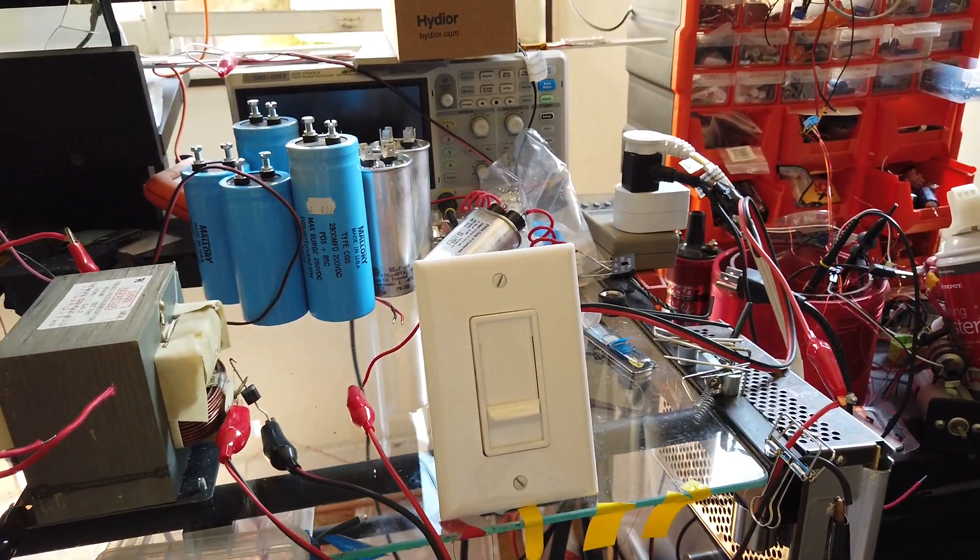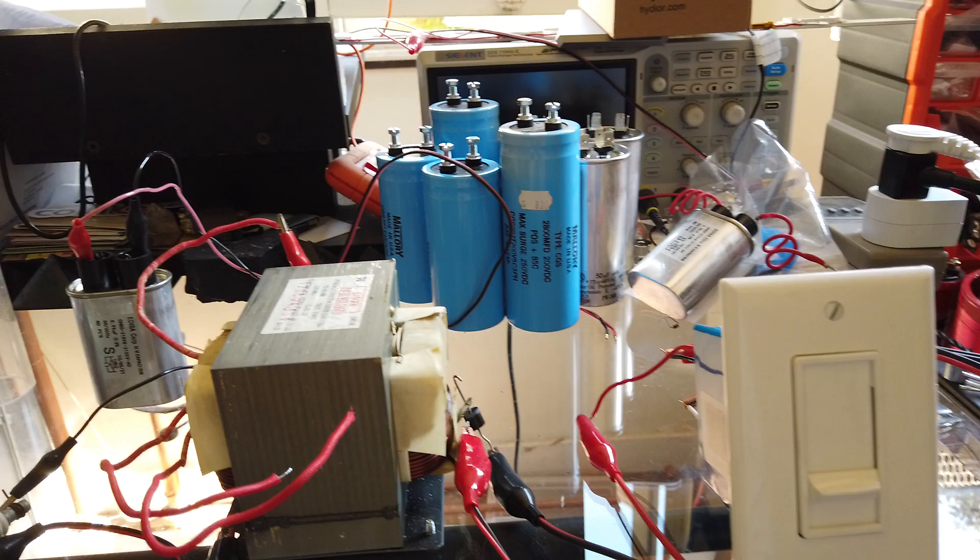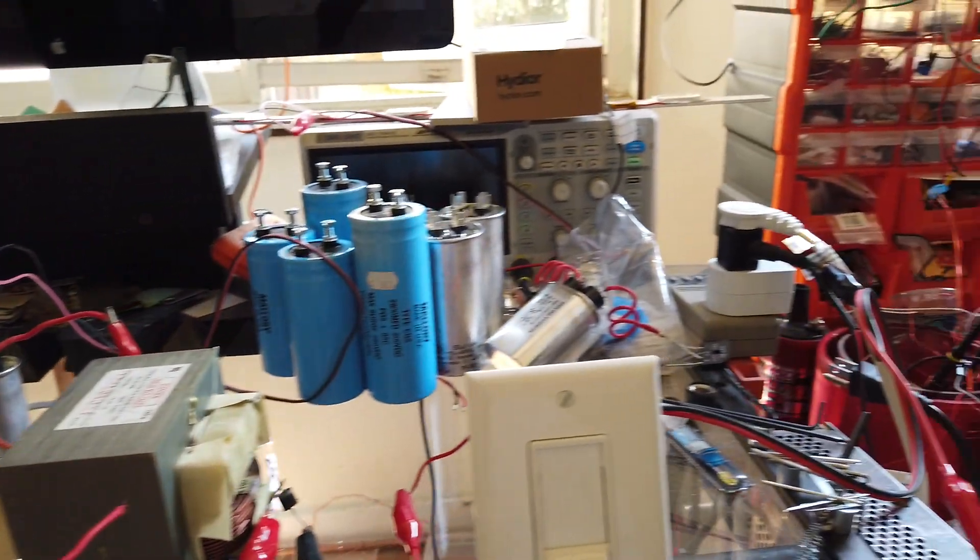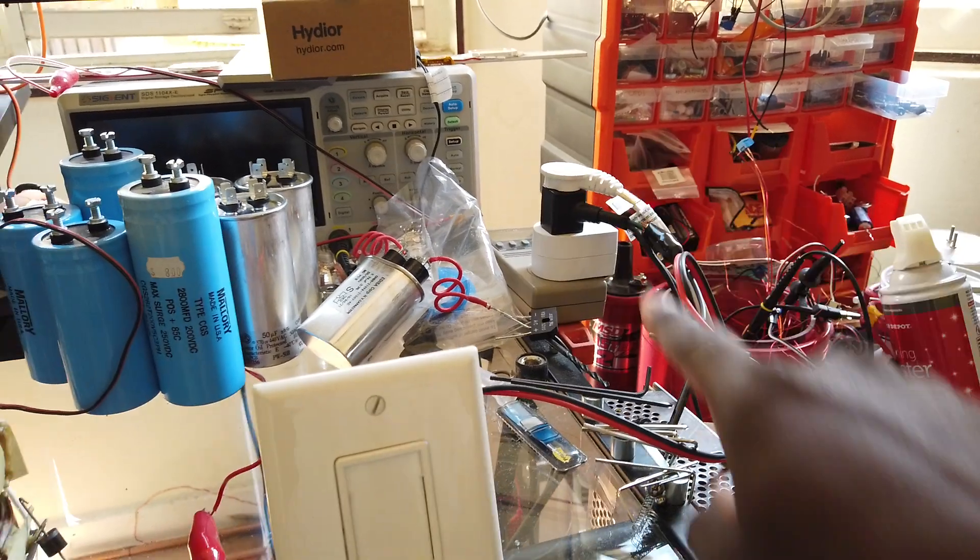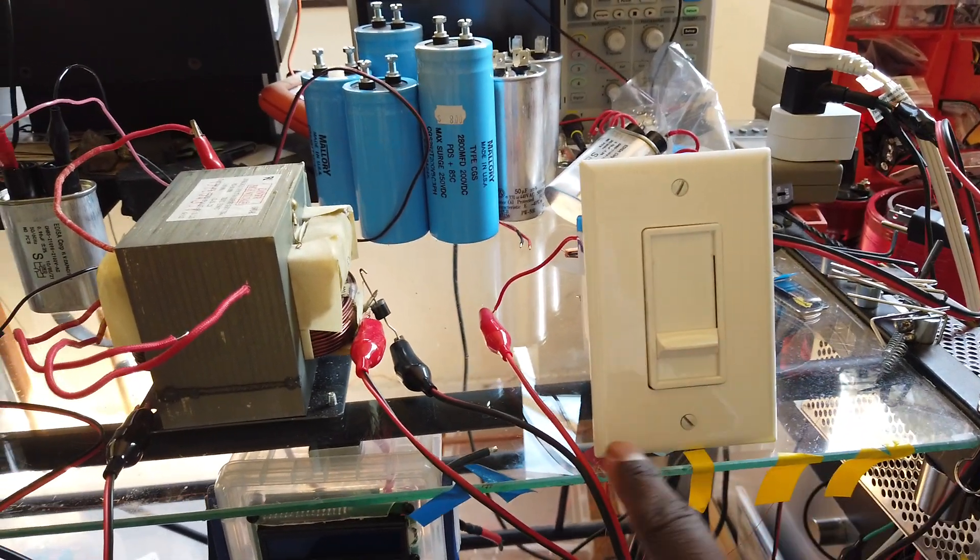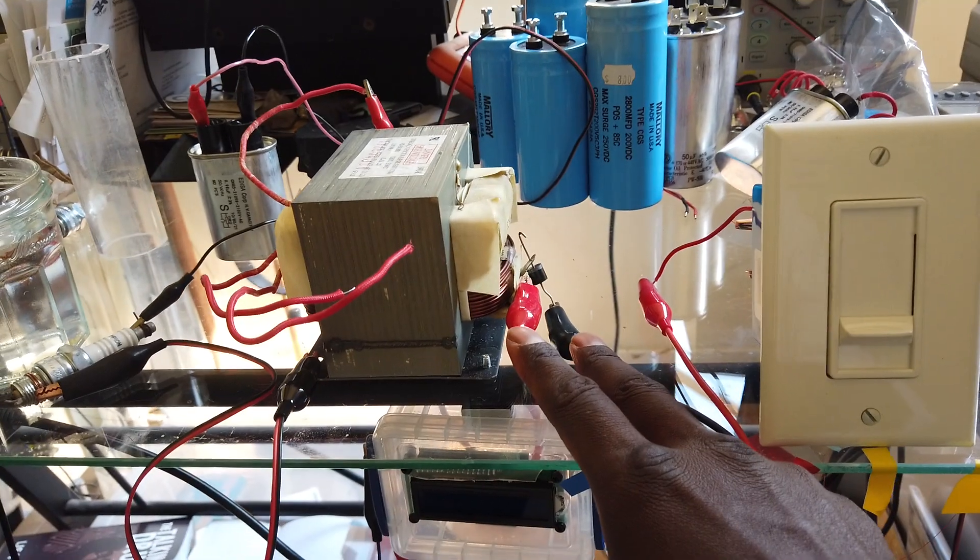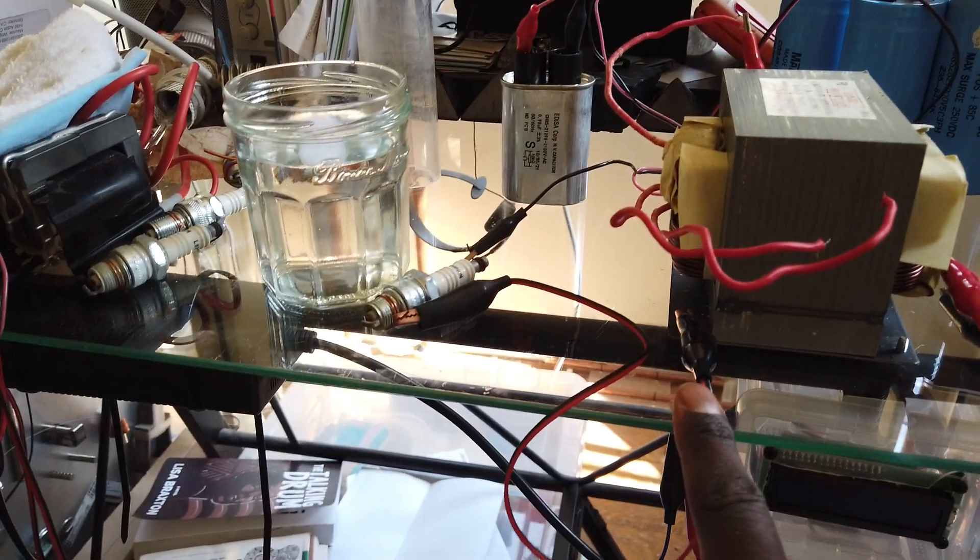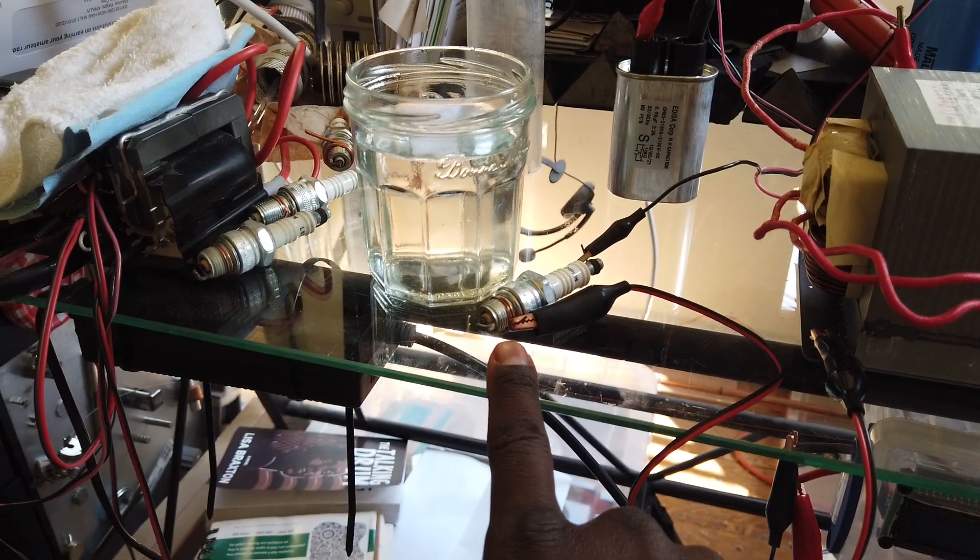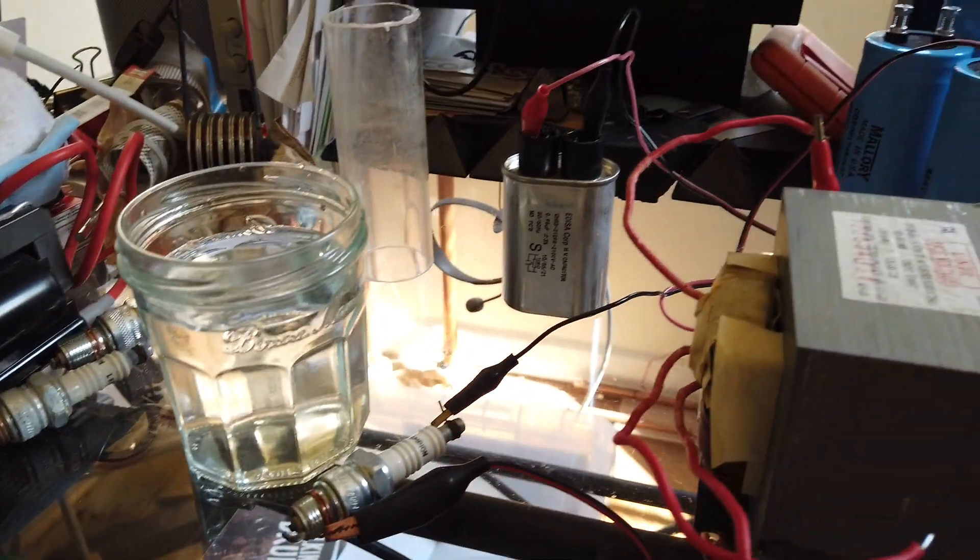So I figured I'd see how far I could take it. Now I have AC coming into this dimmer switch which then goes into the transformer, the microwave oven transformer. Ground goes to spark plug ground side.